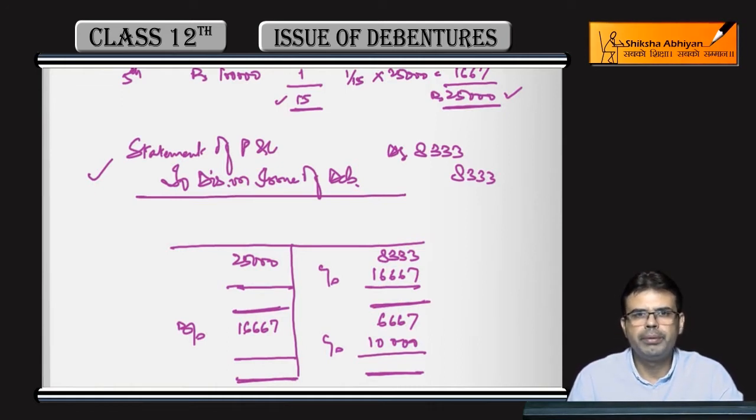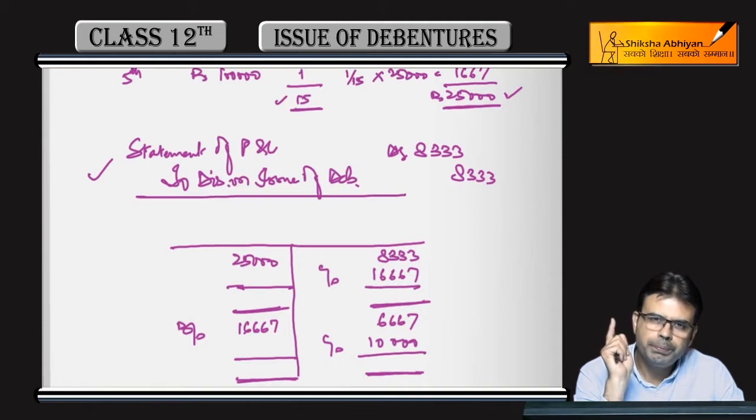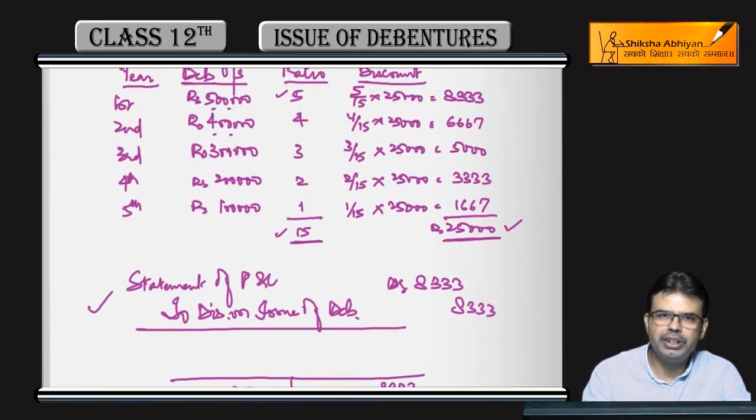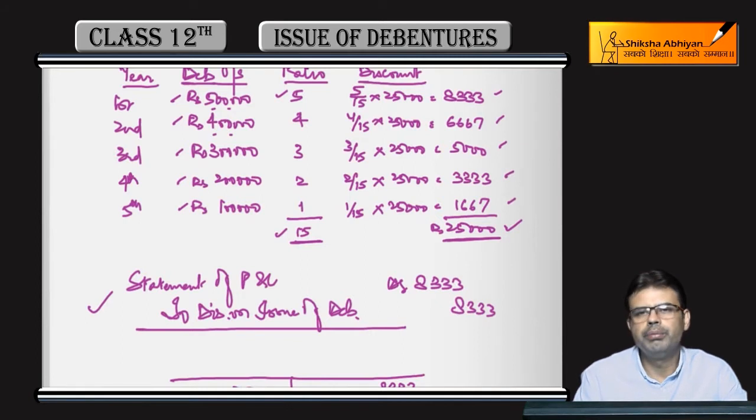In the first method when we had to repay all debentures together, every year we wrote off the same amount of discount. In this method, we are redeeming debentures every year using the annual drawings method, so the discount write-off should decrease each year. I can explain this logically - in the first method we used the same debentures for all 6 years, so same discount write-off. In the second method we used different amounts of debentures each year, they kept decreasing, so the discount write-off should also decrease. So first it's more, then less, then less, and so on. These are the two methods to write off discount.